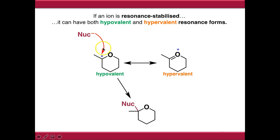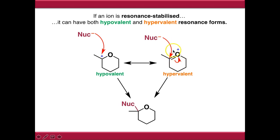This arrow gives us this product, but in order to make this product from the other resonance form, we need to push the electrons onto the adjacent atom, and then push the electrons back onto the oxygen atom. So we are still neutralizing the positive charge, but we're doing it by breaking a bond as opposed to forming a bond. And that's the fundamental difference between how we deal with hypovalent ions and hypervalent ions.